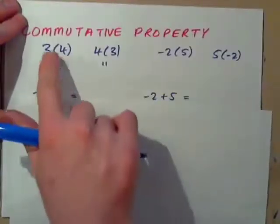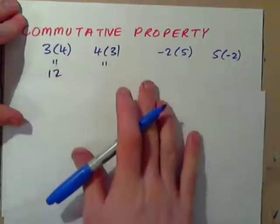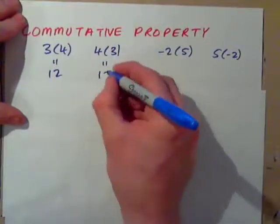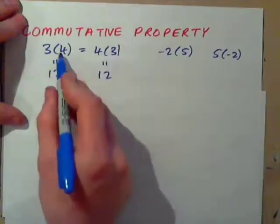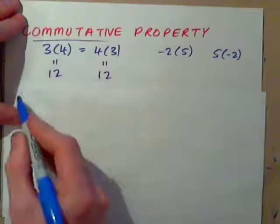commutative property means if you have 3 times 4, that's 12, isn't it? And what's 4 times 3? Well, 4 3's is also 12. So, 3 times 4 is the same as 4 times 3. So, if we're multiplying, the two numbers can be swapped around, and that's the commutative property of multiplication.